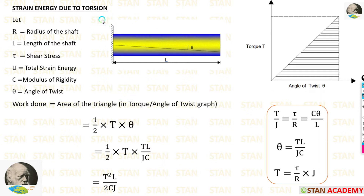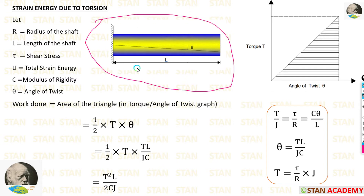For deriving this expression, we are considering a shaft. In this shaft, r is radius, l is length, and theta is angle of the twist.